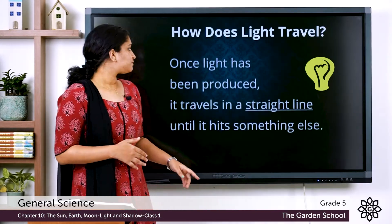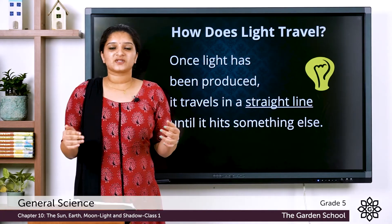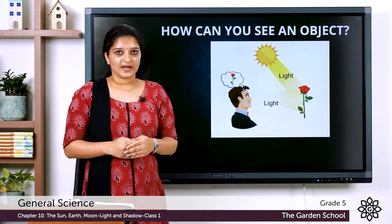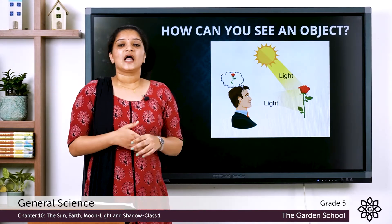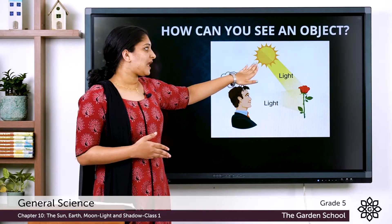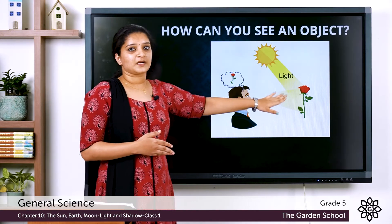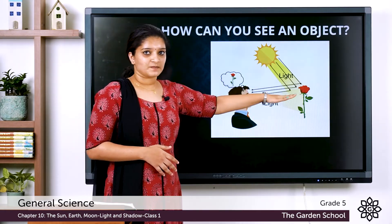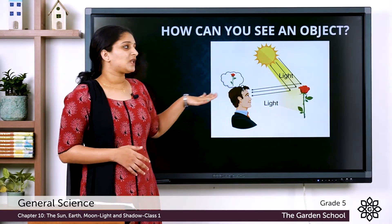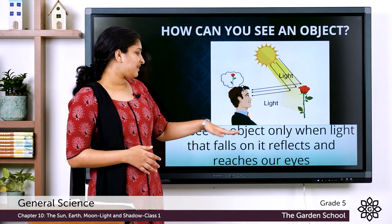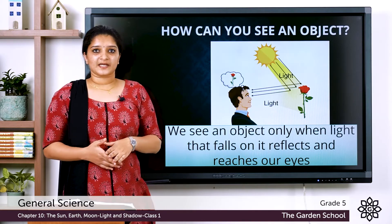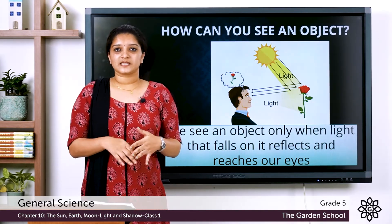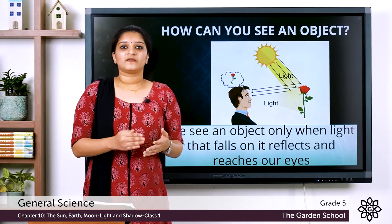Now let's see how light travels. Once light is produced it always travels in a straight line until it hits a surface. When the sun produces light it gets dispersed in different directions. When it hits an object, for example a flower, the light gets reflected back to the person's eyes. We see an object only when light that falls on it gets reflected and reaches our eyes. This property of light is called rectilinear propagation of light, which means light always travels in a straight line.